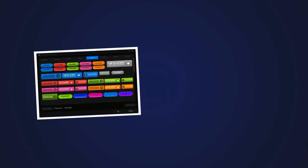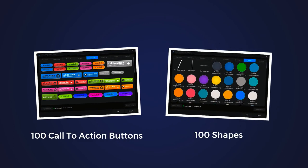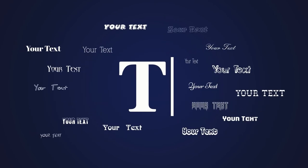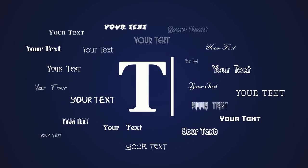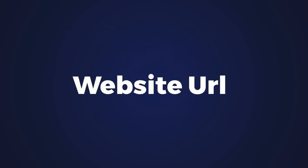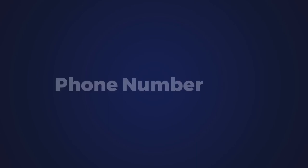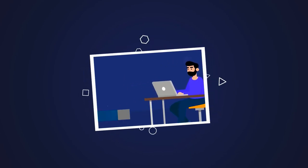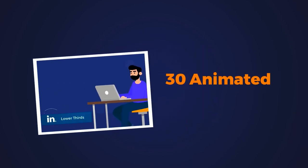You also get 100 call-to-action buttons, 100 shapes, and 300 artistic fonts to make your videos look way cooler. Plus, you can add your branding, website URL, or phone number so people will know who you are — with 30 animated lower thirds, just like the news channels.